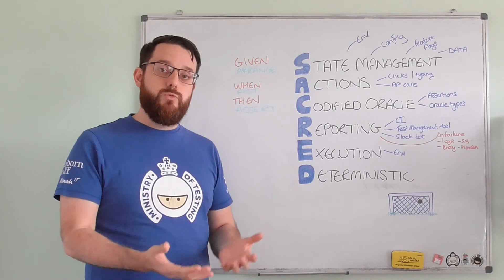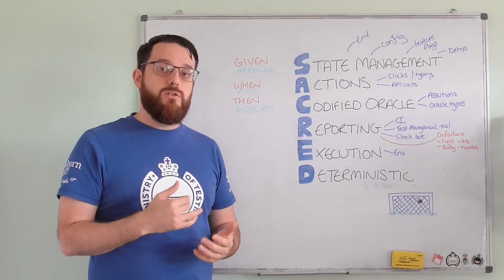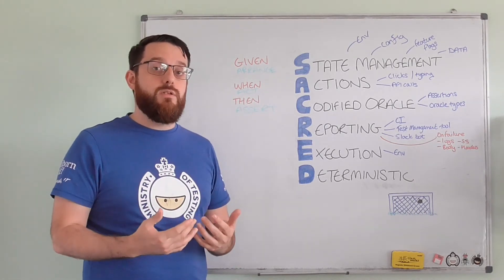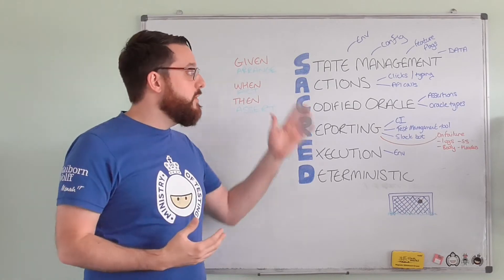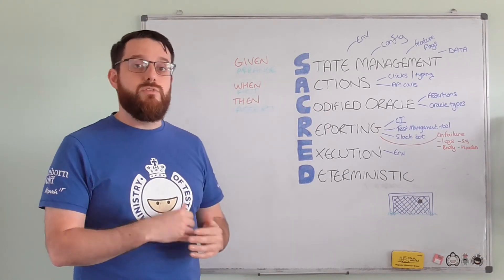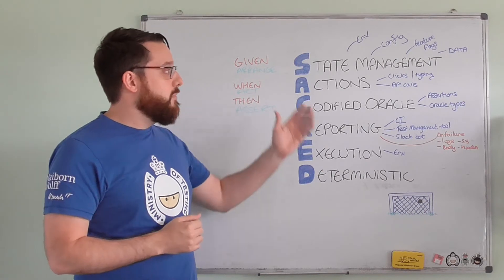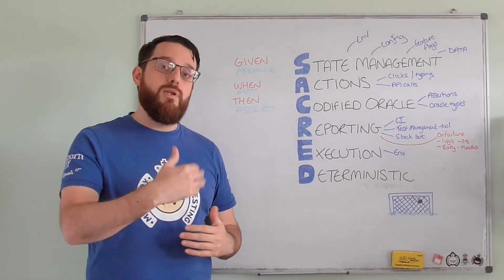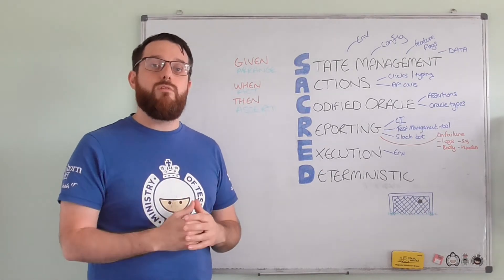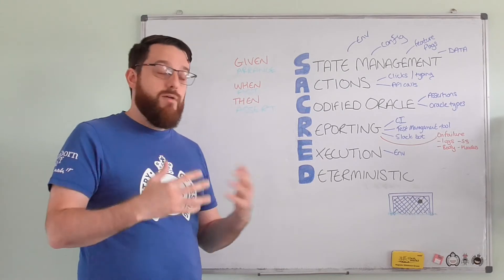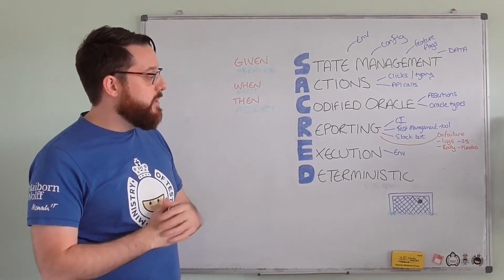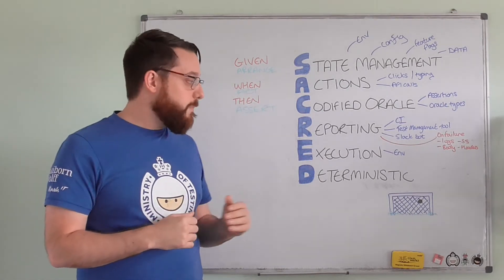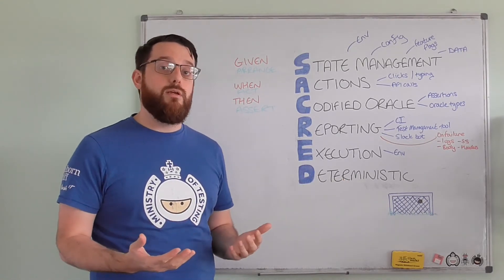So if you've seen flakiness, or what we associate as flakiness, perhaps this is an opportunity to go and improve one of these areas. Perhaps your state's off and your data's getting misaligned. Perhaps your actions aren't right—they're not happening in the right order because you're not waiting for the right things, or whatever it is. Try and pinpoint which bit it is to get this goal of them being deterministic.